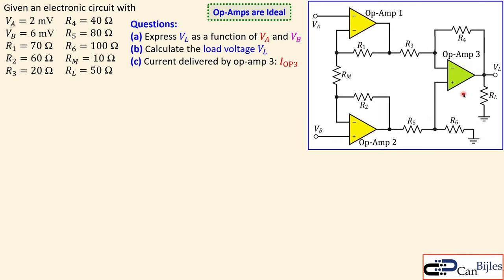We have this circuit with three op-amps and two input DC voltage sources Va and Vb, along with a couple of resistors. All component values and input voltage source values are shown. The questions are: first, express the load voltage VL as a function of Va and Vb; second, calculate the load voltage; and third, find the current delivered by op-amp three.